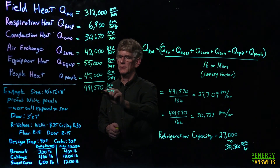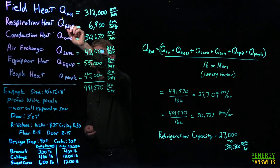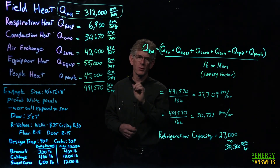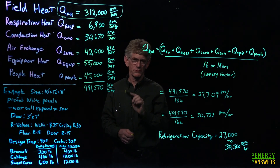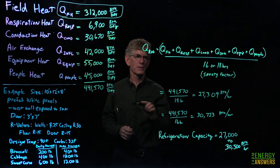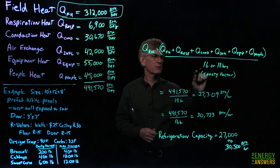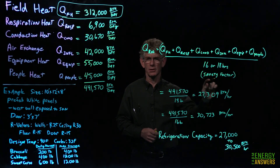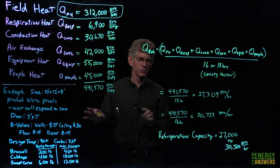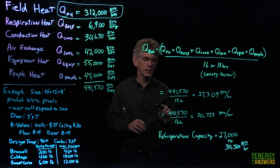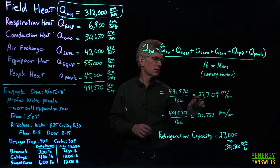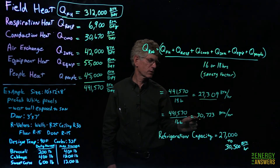For the final summary, we total all components, which comes to approximately 491,000 BTUs per day. Field heat is by far the biggest component and dwarfs everything else — it's the most critical calculation because it most affects refrigeration sizing. If the system isn't large enough, you won't get the product cool fast enough to retain quality. We then divide the total by 16 to 18 hours as a safety factor — we don't want the system running 24 hours a day, because if numbers are slightly off or you put in more produce than planned, you won't cool fast enough.